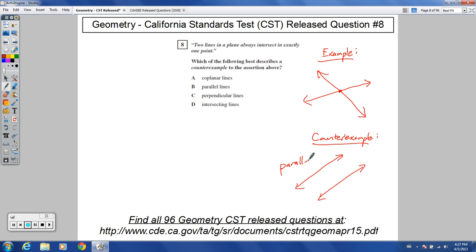So if they're parallel lines, they wouldn't touch. They wouldn't intersect in exactly one point like this claim is saying they do. So choice B would be the right choice there. For number eight, choice B is the correct answer.